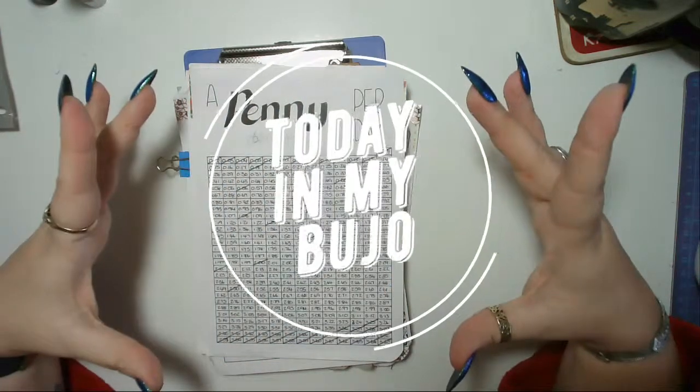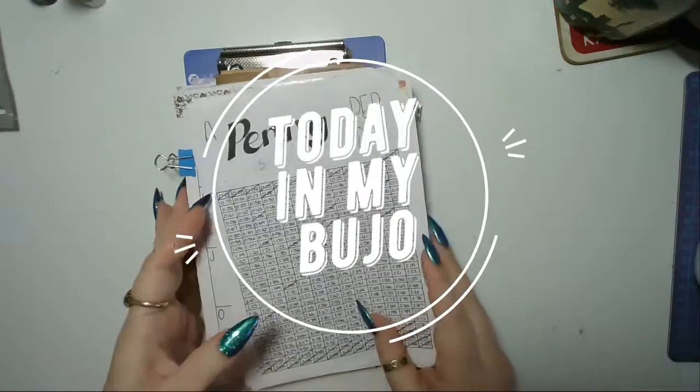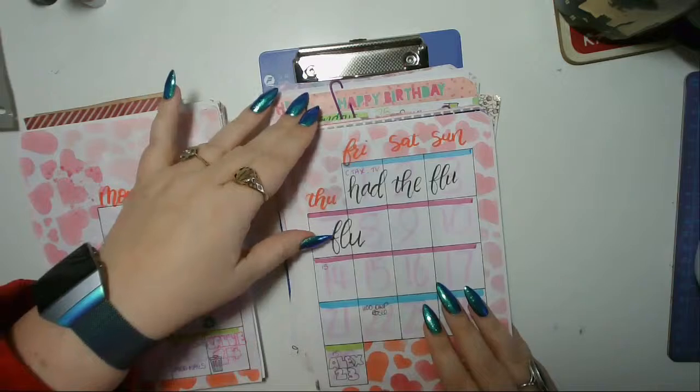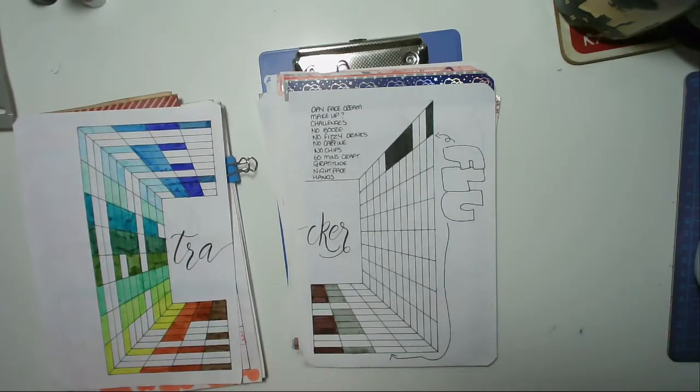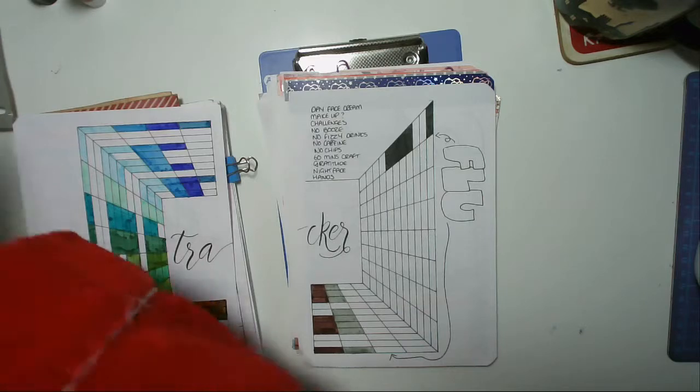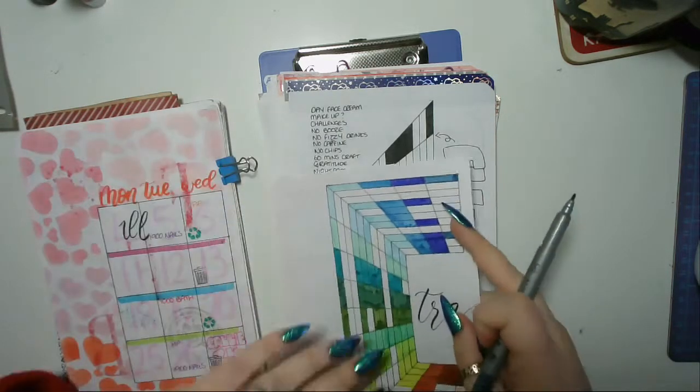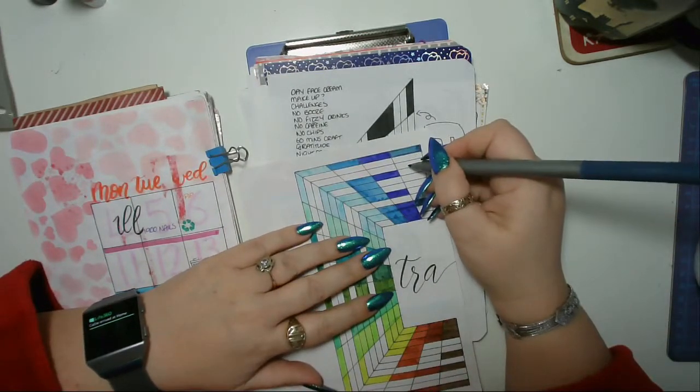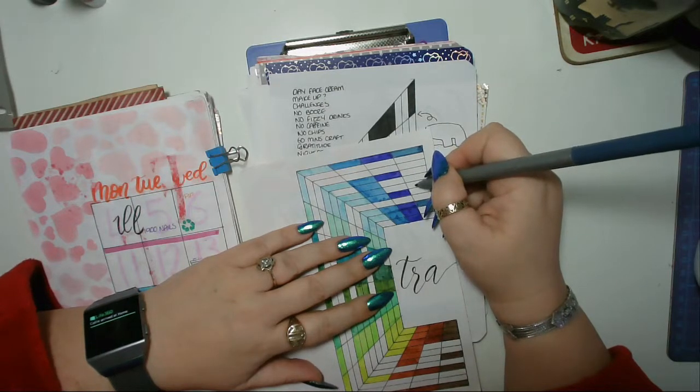Welcome to today in my bujo. I hope you're all okay. Let's jump straight in because I need to go and get ready - I'm out for the day with my daughter as part of her birthday. I didn't do my makeup, didn't do challenges, I had booze, I had fizzy, I had caffeine, I had chips.